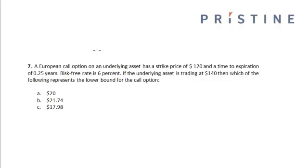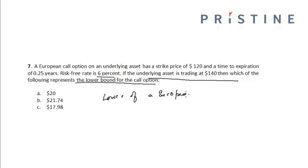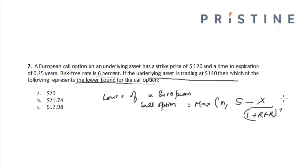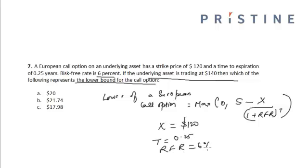A European call option on an underlying asset has a strike price of $120 and a time to expiration of 0.25 years. The risk-free rate is 6%. If the underlying asset is trading at $140, which of the following represents the lower bound for the call option? The lower bound for a European call option is equal to the maximum of 0 or the stock price minus the present value of the exercise price. In this case, X is equal to $120, T is equal to 0.25, and the risk-free rate is 6%, with S equal to $140.